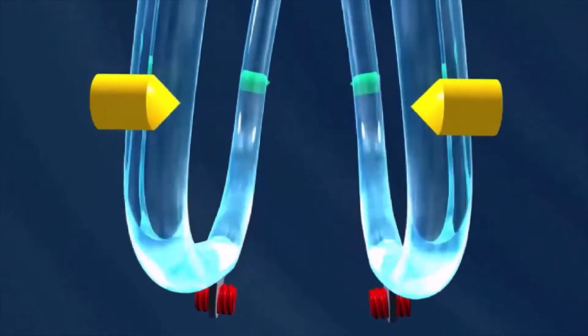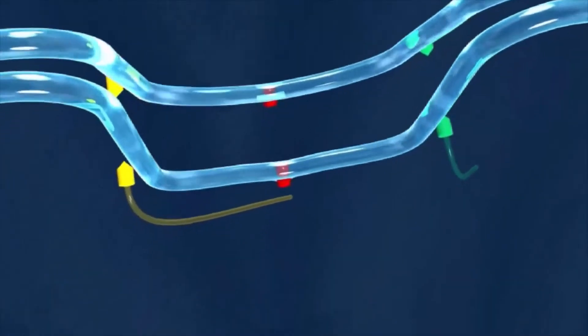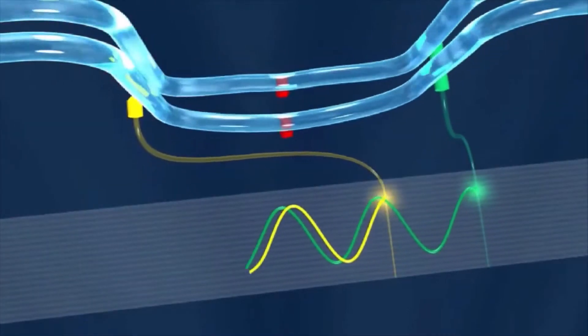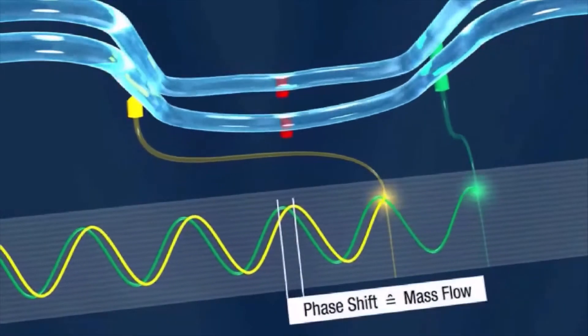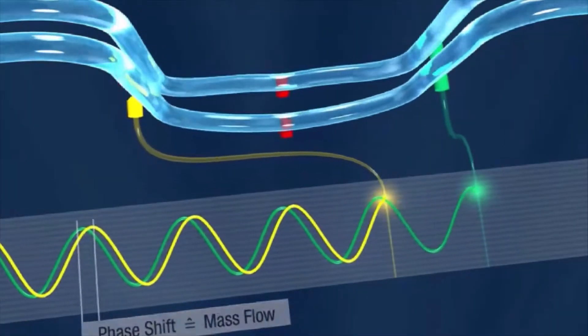This deformation is registered by two sensors and forms the basis of the measuring result. A phase shift occurs between the first and the second sensor. The mass flow rate is derived from this phase difference.